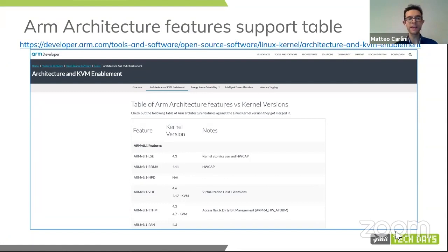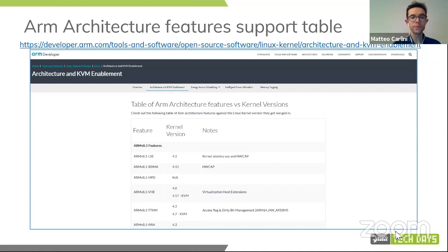There is a public table available on developer.arm.com which precisely maps all the specific architectural features from the ARM 8.1 architecture up to 8.6, and the specific kernel revision in which that feature got enabled for the first time. There are also notes for ongoing features or features that are currently queued or under development. Go check it out because it has a lot of good information.